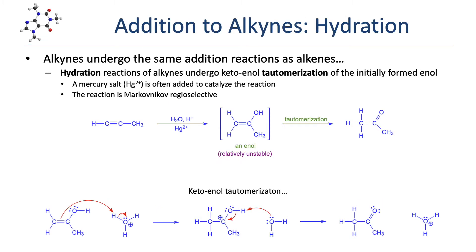Alkynes also undergo acid-catalyzed hydration. A mercury(2+) salt is often added to further catalyze the reaction, particularly with terminal alkynes. As expected, the reaction is Markovnikov regioselective, placing the hydroxy group on the more highly substituted carbon. The reaction initially results in the formation of an enol, which is relatively unstable and undergoes a special rearrangement called tautomerization to give a carbonyl compound.